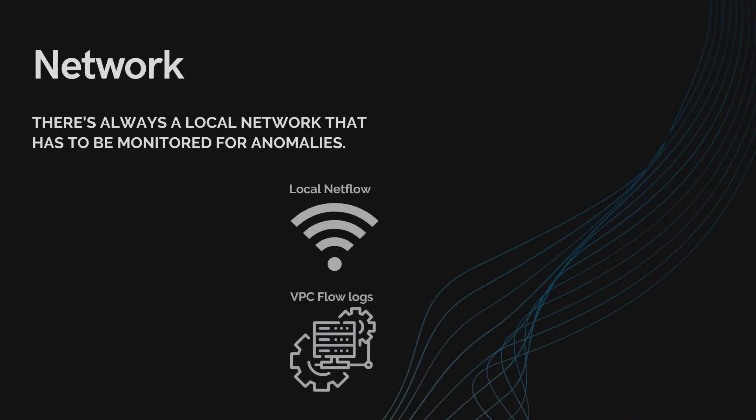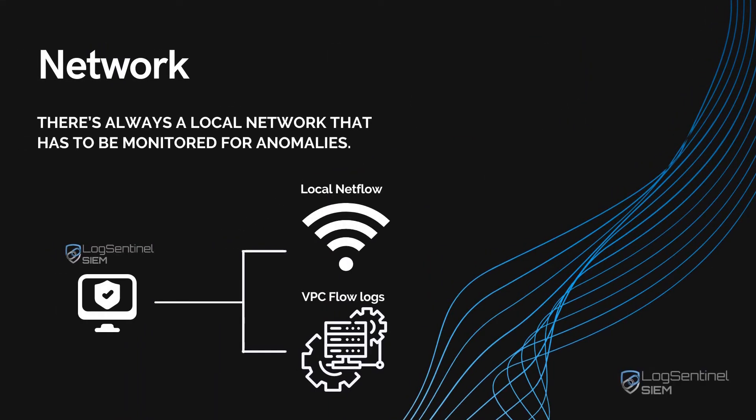The third scenario is the Network. Even when everything is run on Google Cloud Platform, there's always a local network that has to be monitored for anomalies. A SIEM can collect both the VPC flow logs and the local net flow for complete visibility.